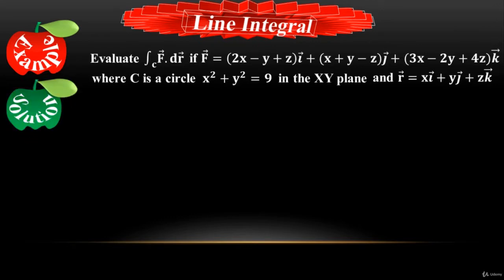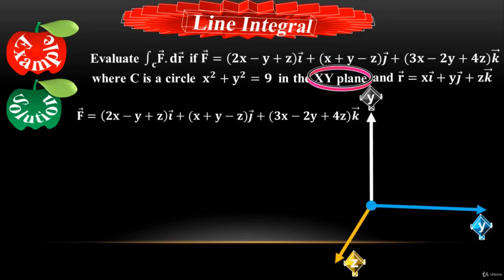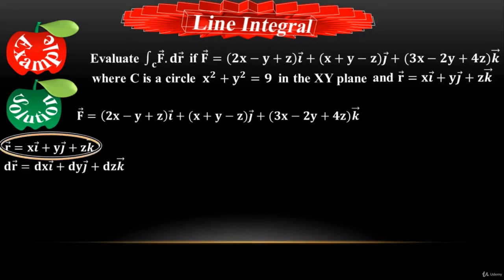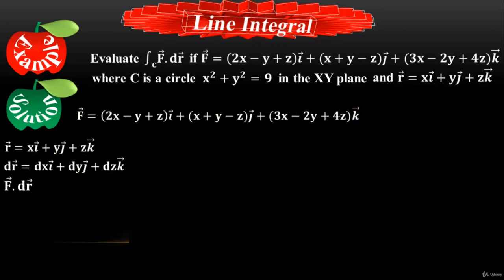Vector F has been given as (2x − y + z)i + (x + y − z)j + (3x − 2y + 4z)k. Since the circle is in the xy-plane, we find the line integral where r = xi + yj + zk. Taking its derivative: dr = dx·i + dy·j + dz·k. Now let me find the dot product of vector F and dr.